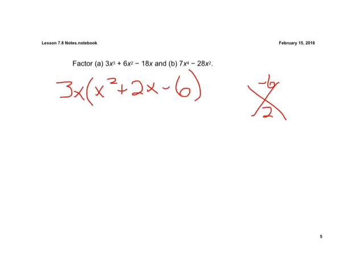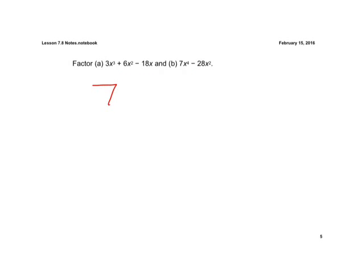Okay, let's go ahead and do part B now. We know we can factor a 7 out of both of those. Let's also take an x squared out. If we do that, we have an x squared left, minus 7 goes into 28, 4 times. Now, let's check and see if we can factor here.